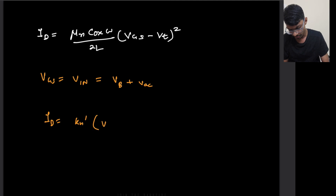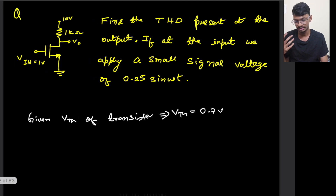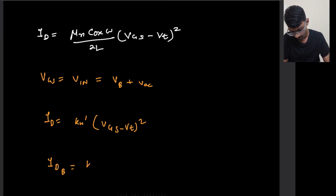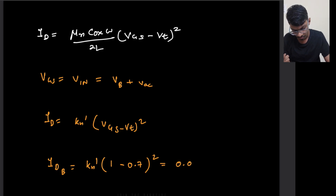Let's calculate the bias current — the DC level of the current when no small signal is applied. I_D_Q = Kn' · (V_B − V_T)² = Kn' · (1 − 0.7)² = Kn' · (0.3)² = 0.09·Kn'.